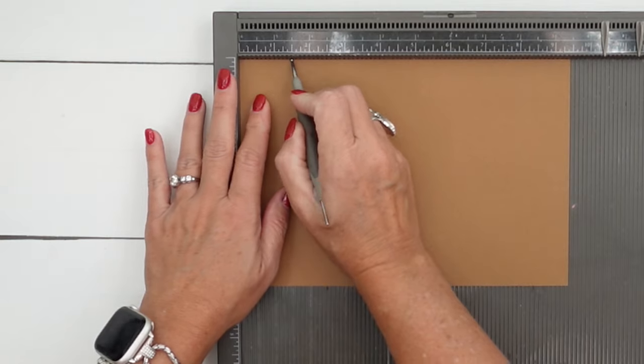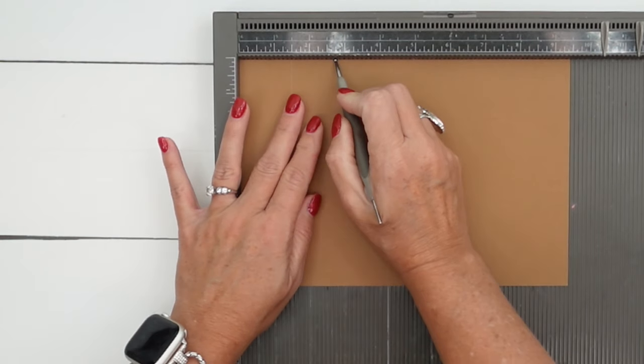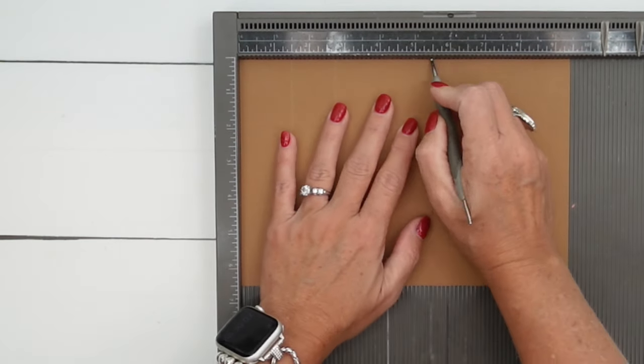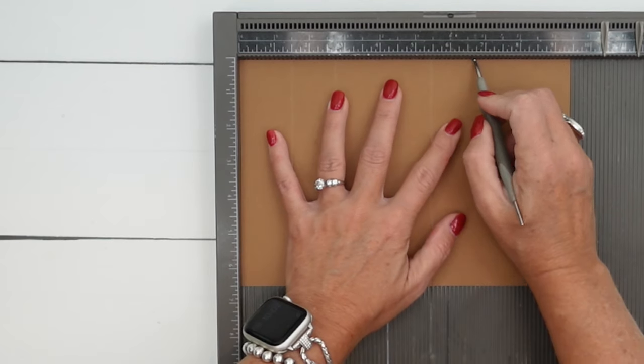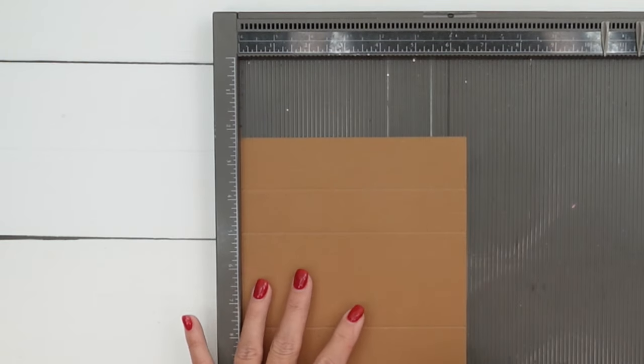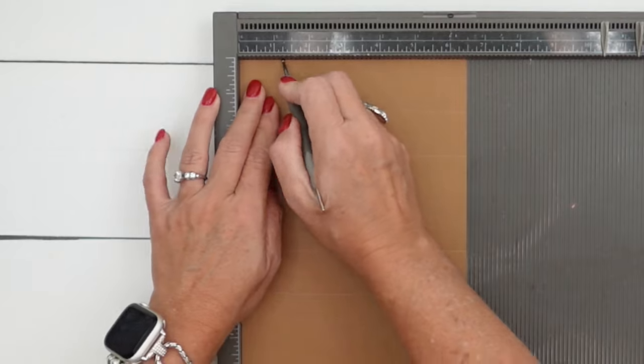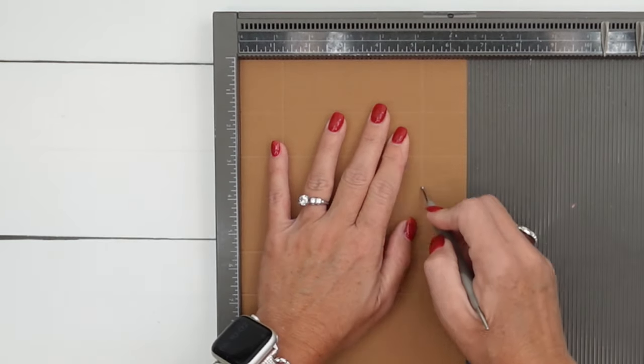We're going to do one and a half, two and three fourths, five and a half, and six and three fourths. Turn it to the short side and score it at one and a fourth and five and a fourth.